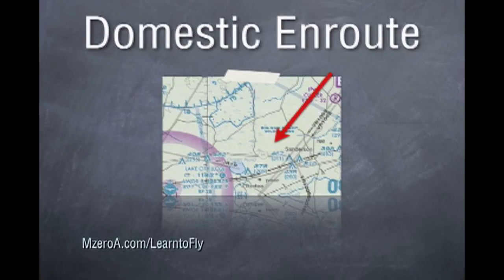And Domestic Enroute is just anywhere else. If it's not shaded or not a surface or not a transition, it's Domestic Enroute, and Class Echo starts at 1,200 feet there.